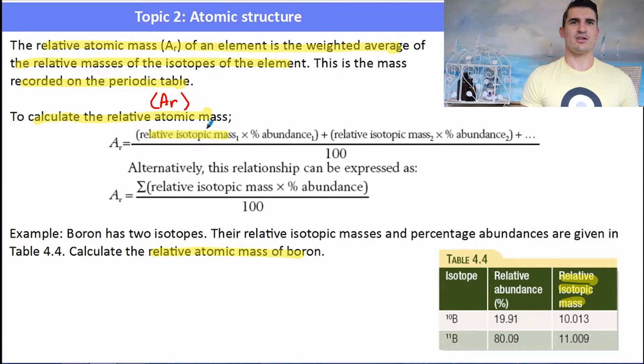So an example calculation, boron has two isotopes and the data is given in the table on the left-hand side. Their relative masses and percentage abundances are given, calculate the relative atomic mass of boron. So it's asking us to find the Ar.